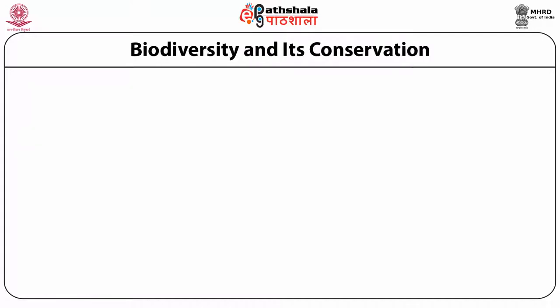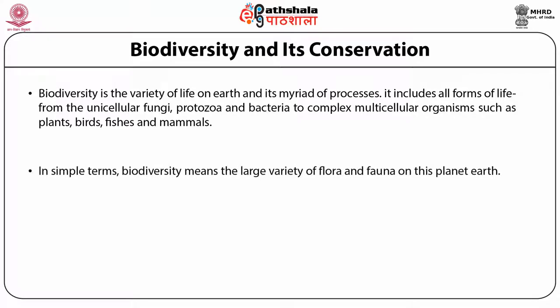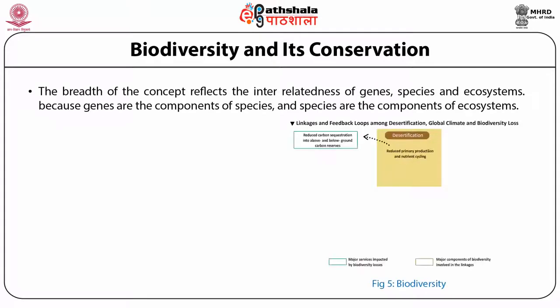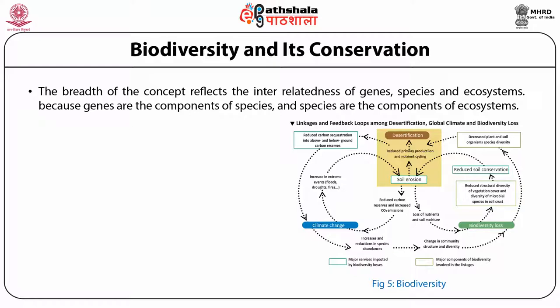Biodiversity is the variety of life on earth and its myriad of processes. It includes all forms of life from unicellular fungi, protozoa and bacteria to complex multicellular organisms such as plants, birds, fishes and mammals. In simple terms, biodiversity means the large variety of flora and fauna on this planet. The breadth of the concept reflects the interrelatedness of genes, species and ecosystem, because genes are the components of species and species are the components of ecosystems.